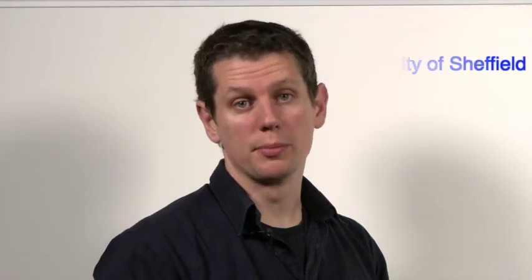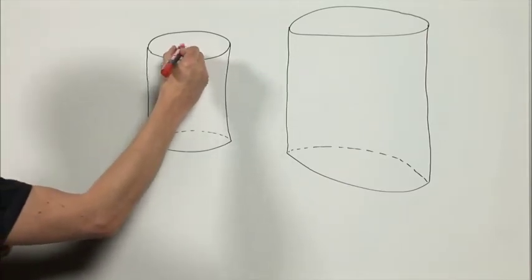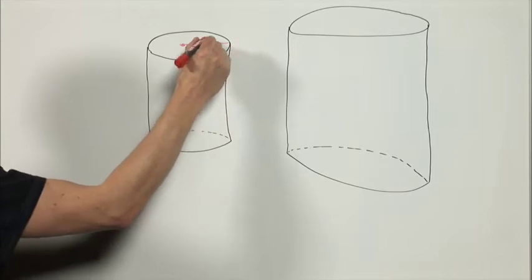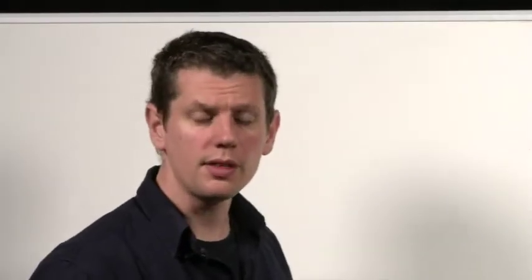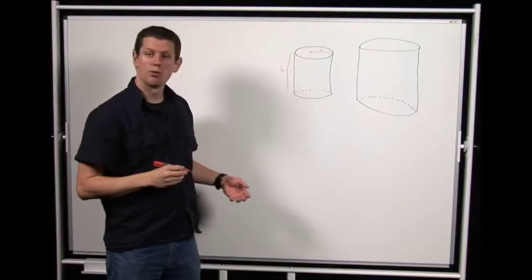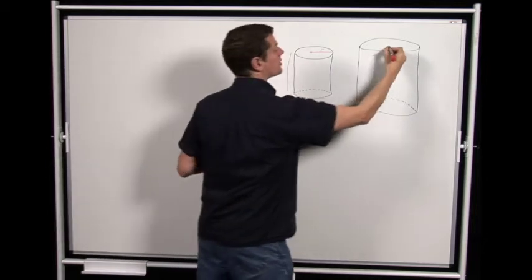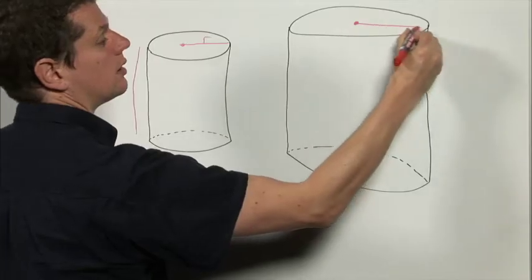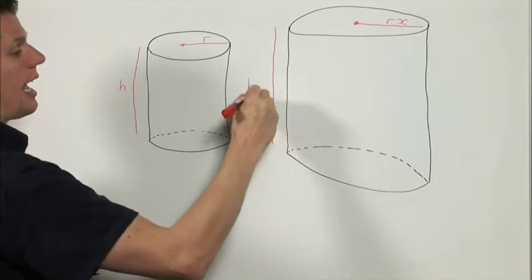We should start this problem by choosing some variables to describe the sizes of the two cylinders. I'm going to take my first cylinder and say that it has base radius r and height h. Then we know that the second cylinder is similar, and I'm going to write x for the scale factor, so it has radius rx and height hx.